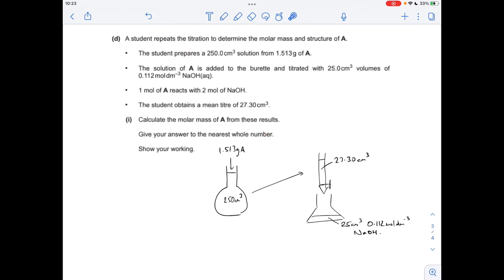Moving on to part D now. So the calculation, as always, I've drawn my little diagram to visualize what's happened. So they've put 1.513 grams of the acid into the volumetric flask. That's gone into the burette. Now, often in these questions, 25's taken out and put in the conical flask. So this one's different. It's gone into the burette. We're told the mean titra was 27.30 cm cubed. It's been titrated against 25 cm cubed samples of that concentration sodium hydroxide solution. And obviously, we've got to work out the MR of the acid and then come up with a structure for it.